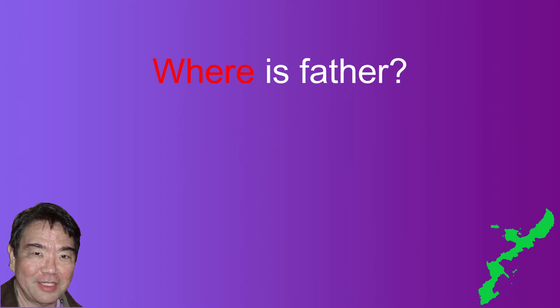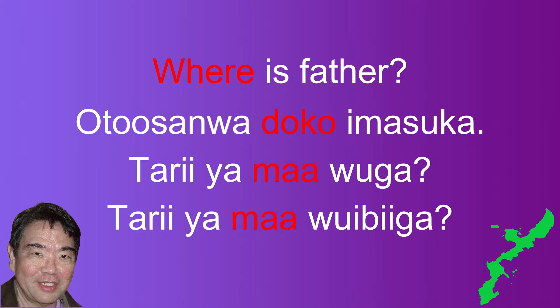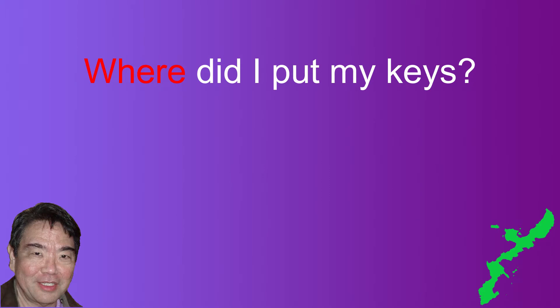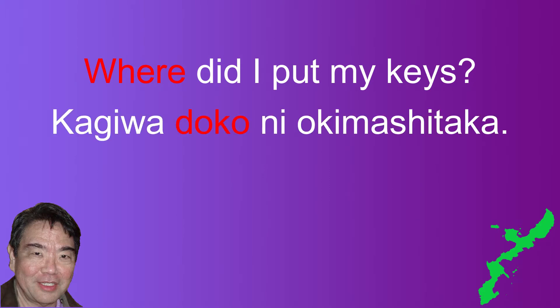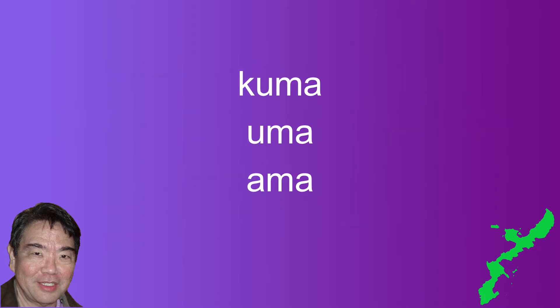So all our examples using the word "ma" will end with "ga." Also we'll see which sentence particles work with "ma," so the past two months of sentence particles will be of tremendous use. The first example is "where is father?" In Japanese it is "o-tōsan wa doko imasu ka." In Uchinaguchi it is "tariya ma wuga" in casual form and "tariya ma wibi ga" in polite form. Another example is "where did I put my keys?" In Japanese it is "kagi wa doko ni okimashita ka."